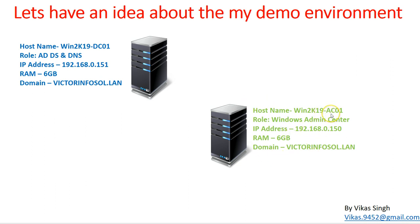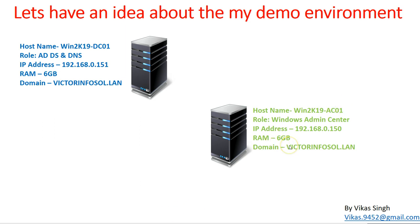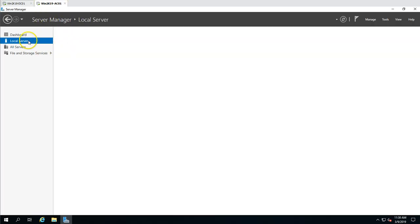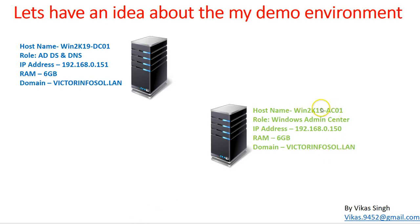This is the machine where we are going to install Admin Center. The machine name is win2k19-ac01, the IP address will be 192.168.0.150, it has 6 GB of memory, and it will be joined to the victorinfosol.lan domain. I intentionally left it unconfigured so we can do everything together — this is a brand new machine with no IP address or domain join configured yet.